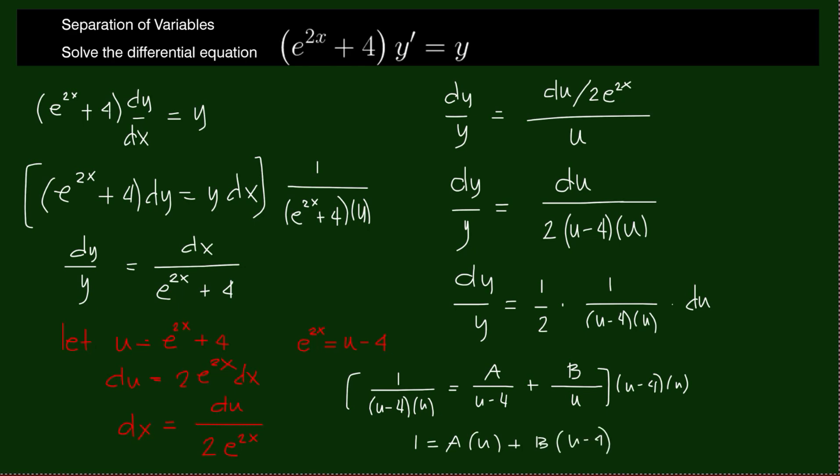We will assign values for u to eliminate one constant and solve the other. Let's say we let u equals 4. This becomes 4 minus 4 equals 0, so we have 1 equals a times 4 plus 0. So our a is 1 fourth.